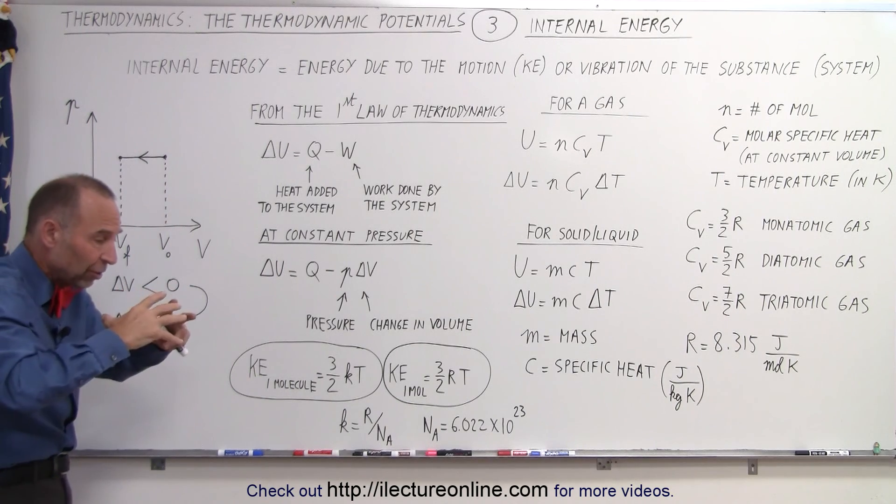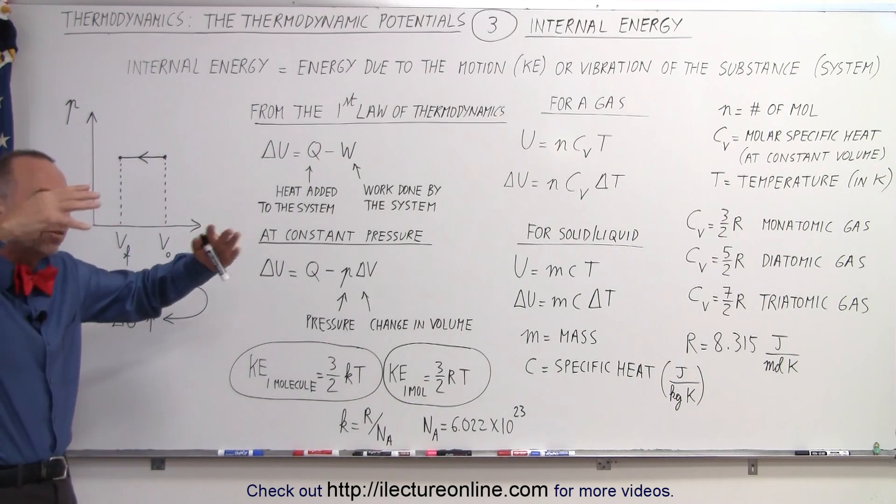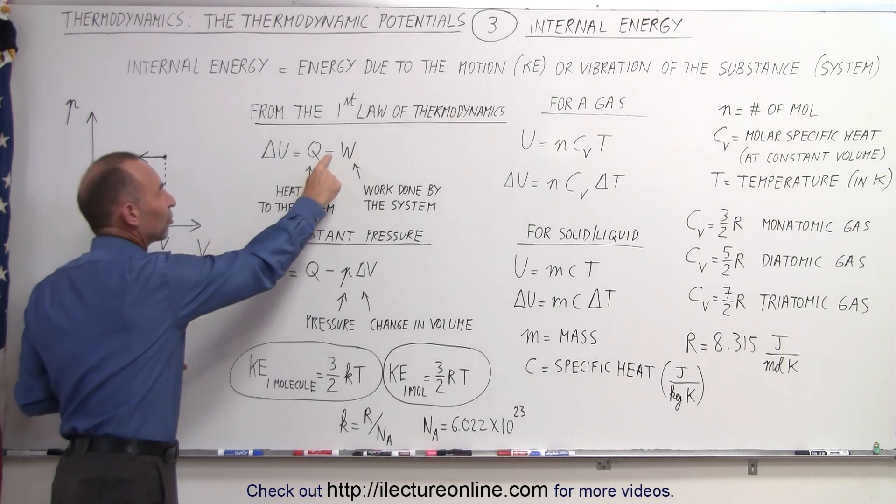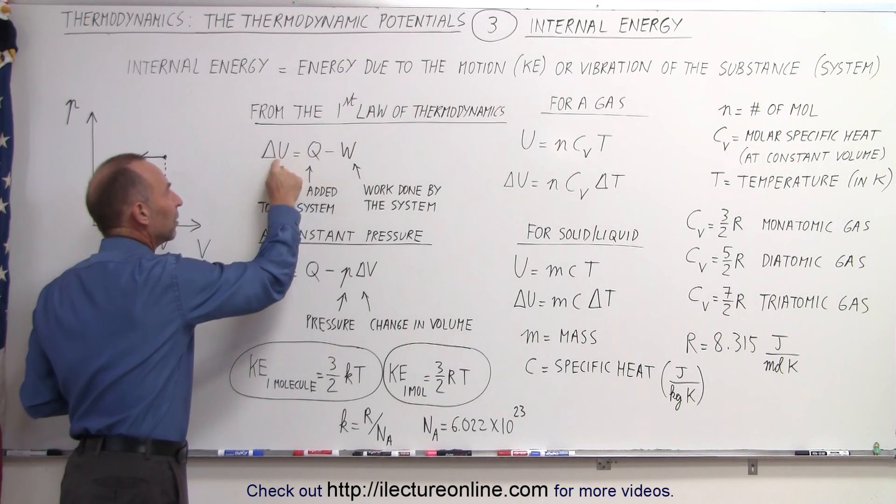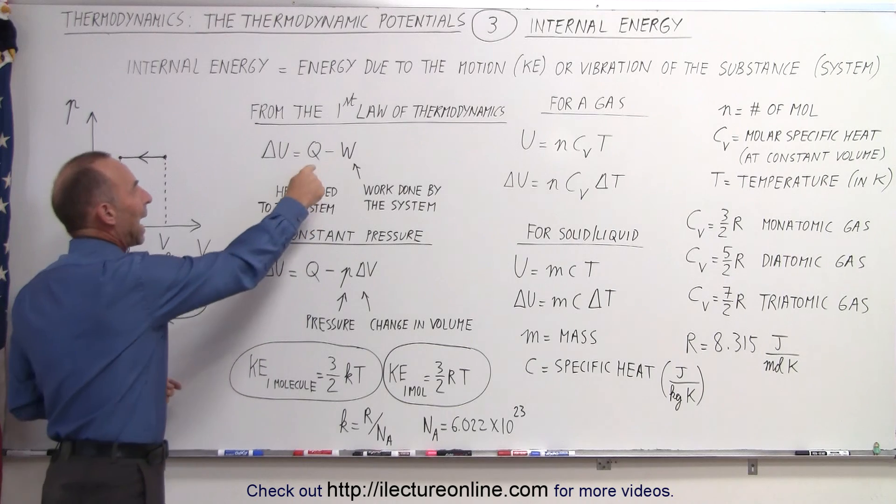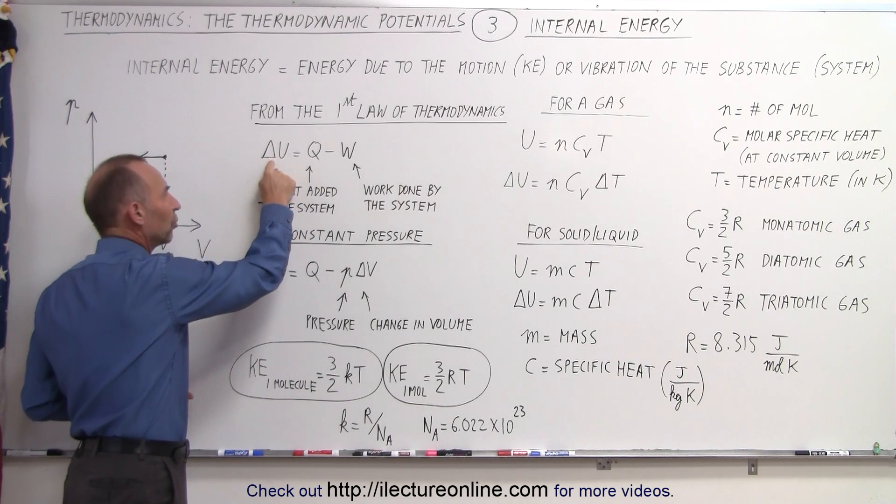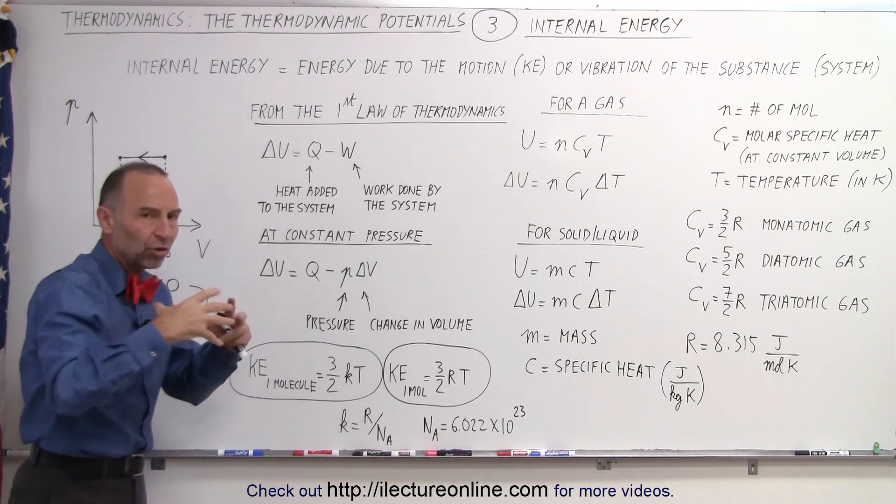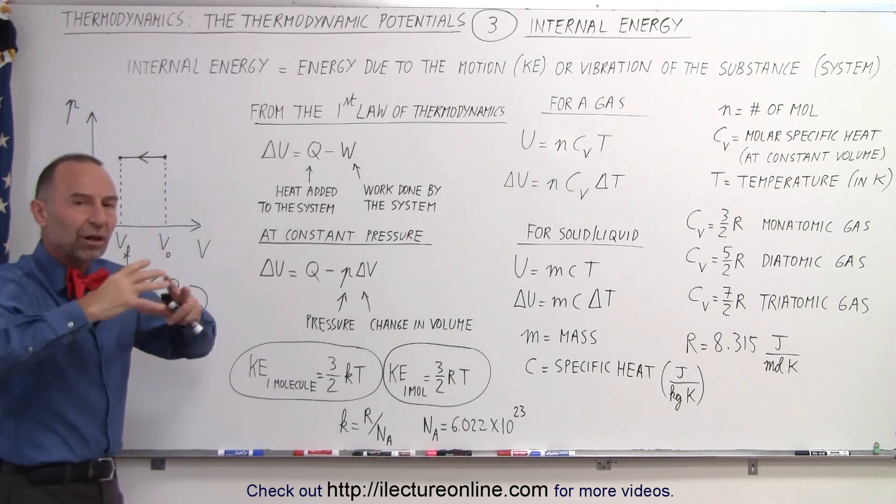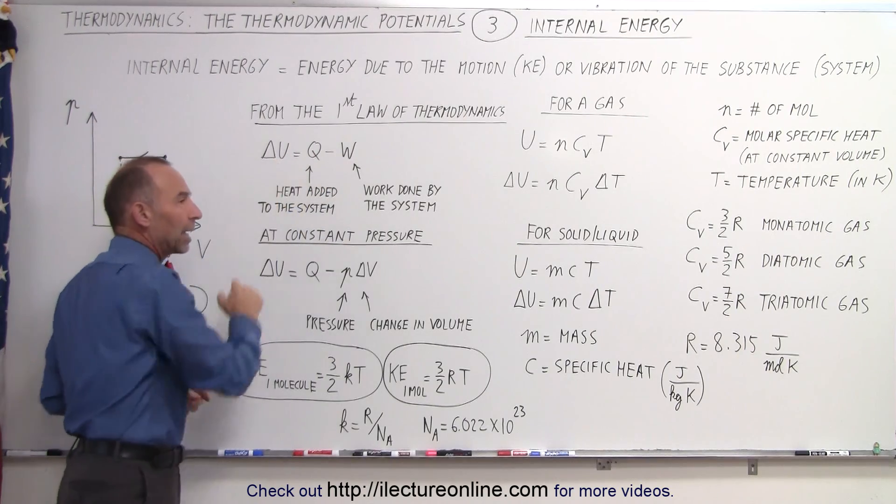But if the system uses energy to expand its volume and pushing against the atmosphere, then indeed we have to subtract that work done from the heat added to the substance to calculate the change in the internal energy. So, bottom line, we add heat, internal energy goes up, we take heat away, internal energy goes down, the system or substance expands, therefore doing work that makes the internal energy go down.